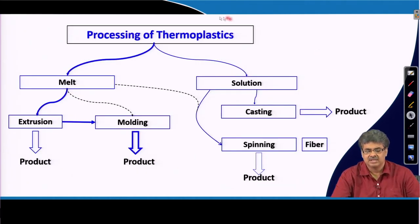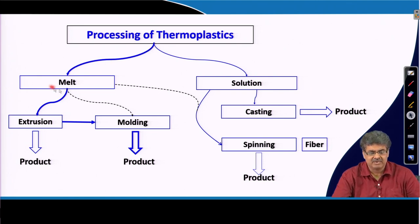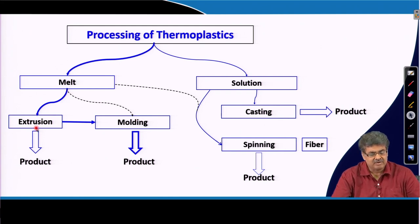Since about 90% of polymers are thermoplastics, we will mainly discuss the processing of thermoplastics in this lecture. The line thickness in the diagram represents the extent or weightage of these processes. Most thermoplastics are melt-processed, and melt processing mainly consists of two steps: extrusion followed by molding. Sometimes molding can be done directly from the melt state, and some products are formed from the extrusion step itself, but most products are manufactured in the molding step.